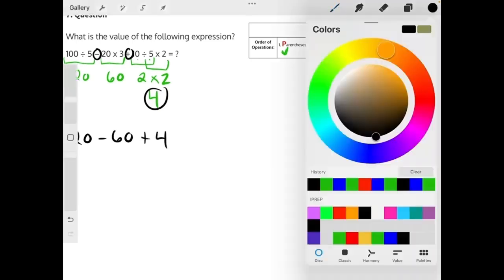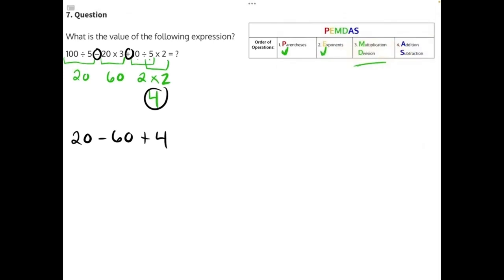The last step is going to be addition and subtraction. We can do this from left to right. 20 minus 60 will give us negative 40. The biggest number carries the sign will be negative 40 plus 4.